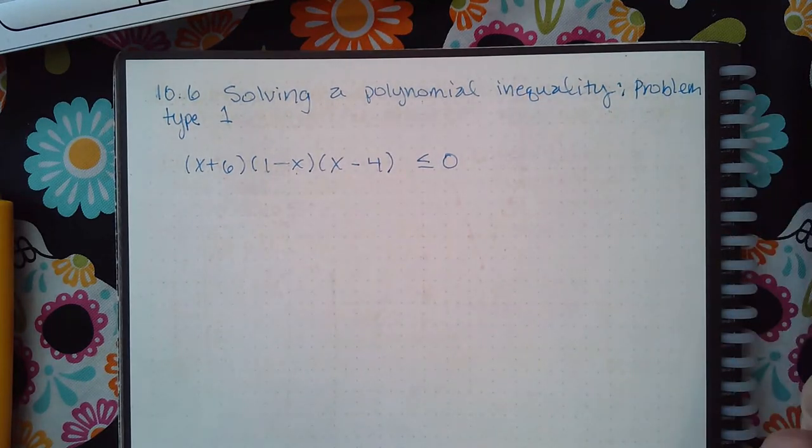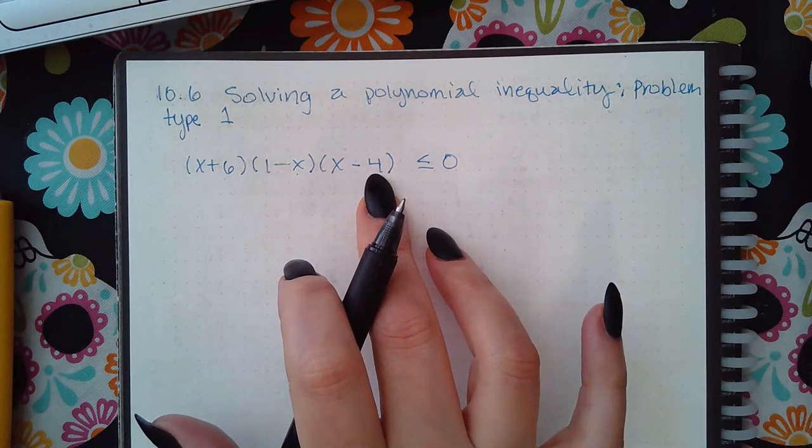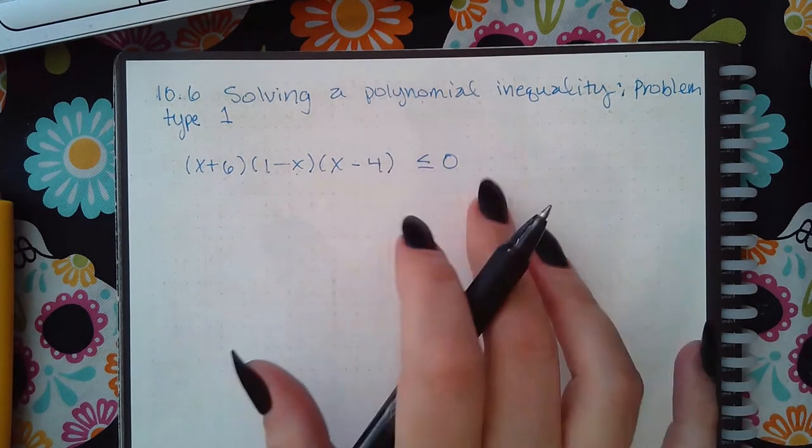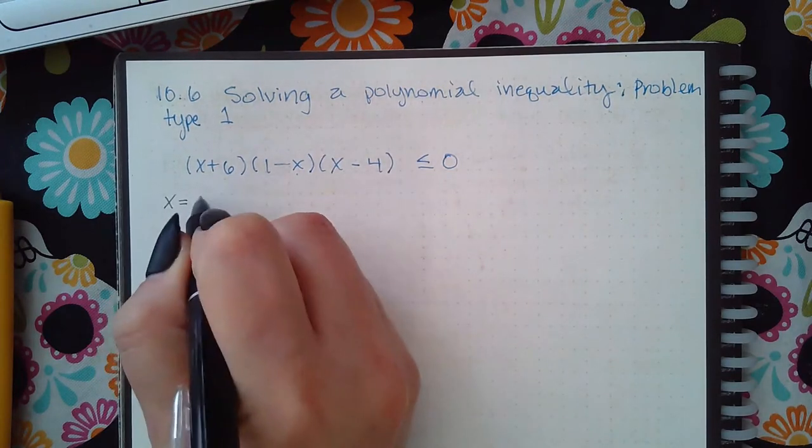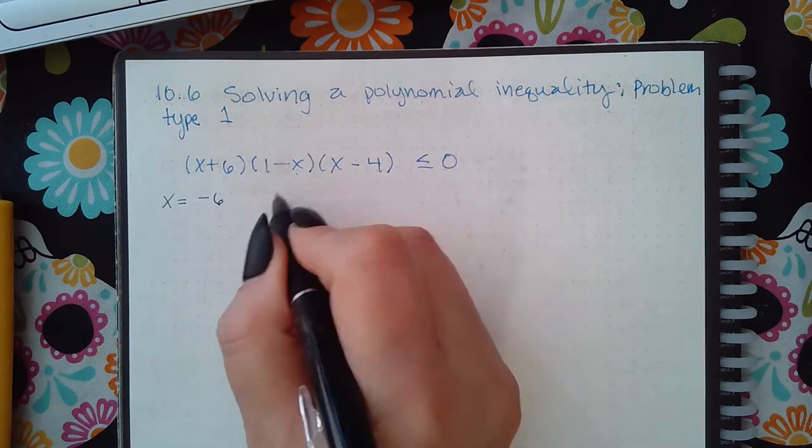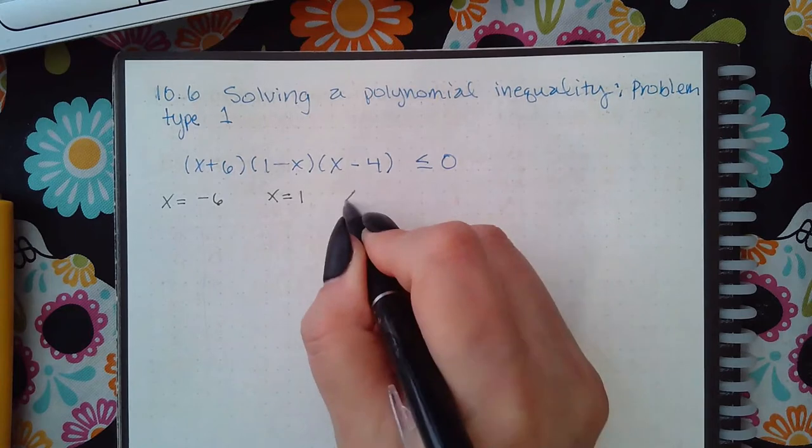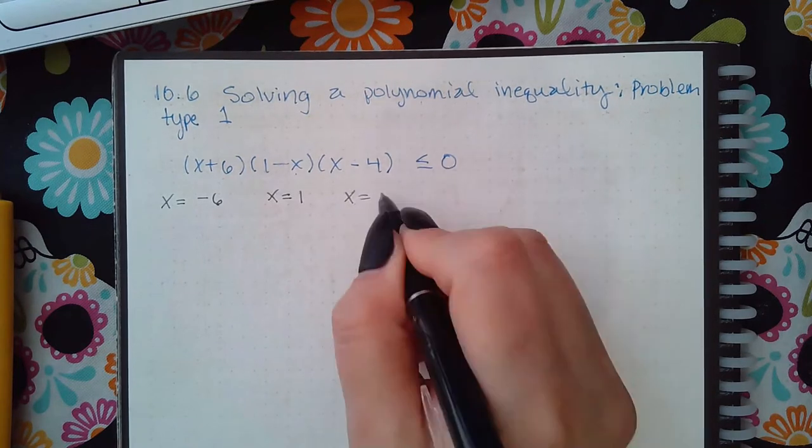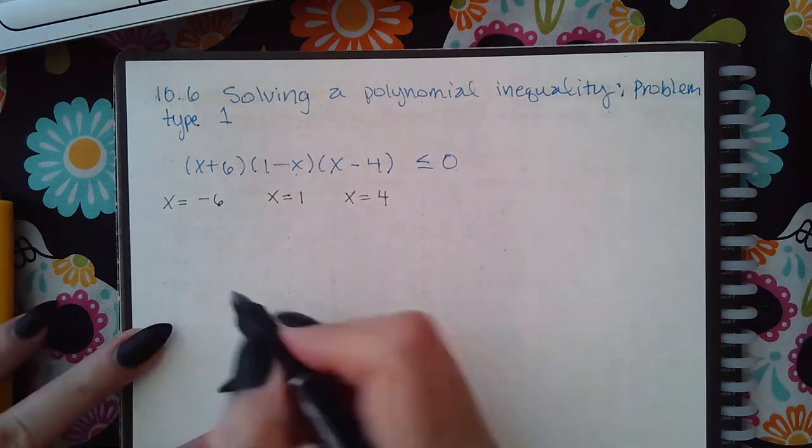The way you do that is you set each one of these parentheses, or each one of these factors, equal to 0. So when I set this one equal to 0 I will get x equal to negative 6. When I set this factor equal to 0 I will get x equal to 1, and when I set this factor equal to 0 I will get x equal to 4.